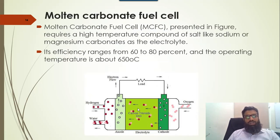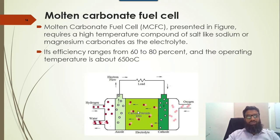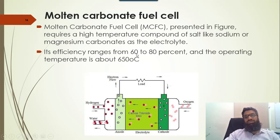The second type is molten carbonate. It basically requires a high temperature compound of salt like sodium or magnesium carbonate as an electrolyte. The electrolyte ion is carbonate ion (CO3²−). Its efficiency range is from 60 to 80%, while its operating temperature is 650 degrees Celsius.